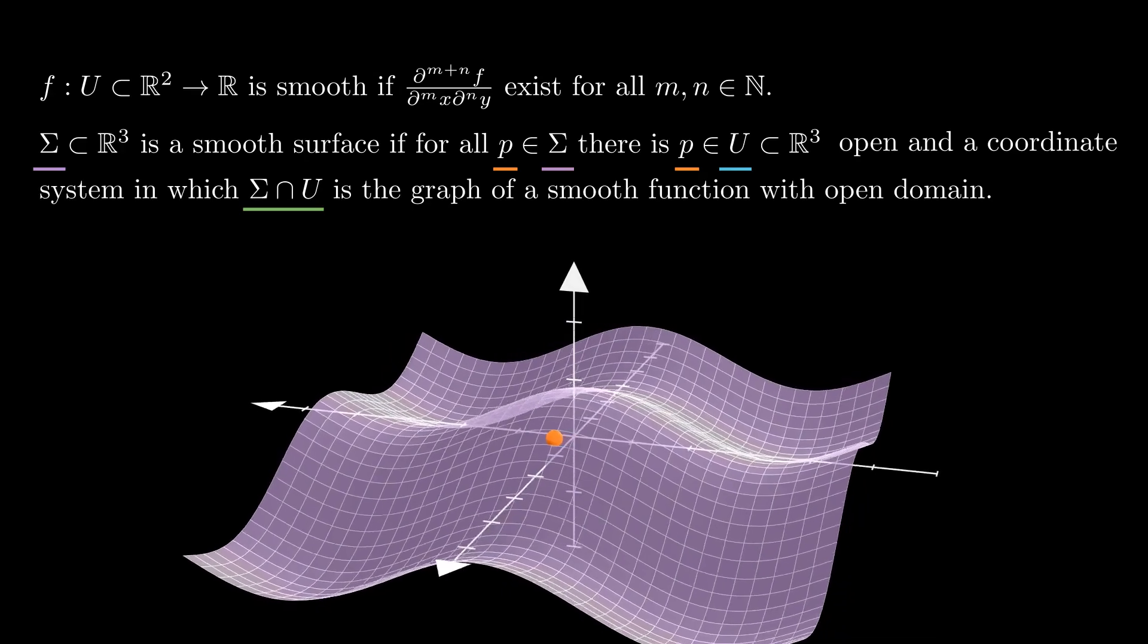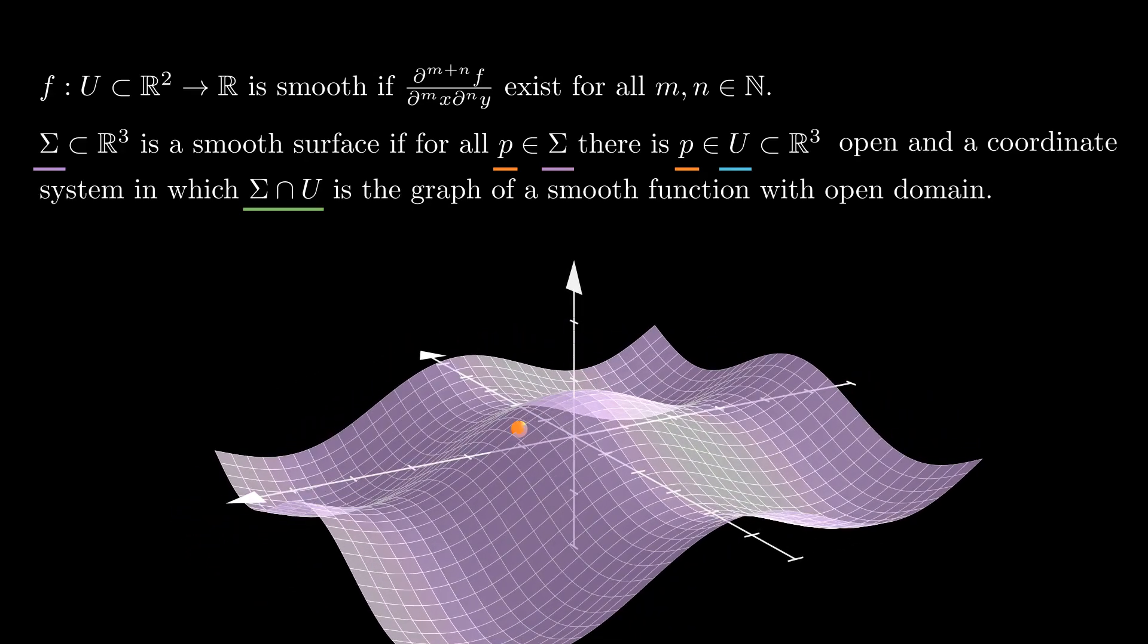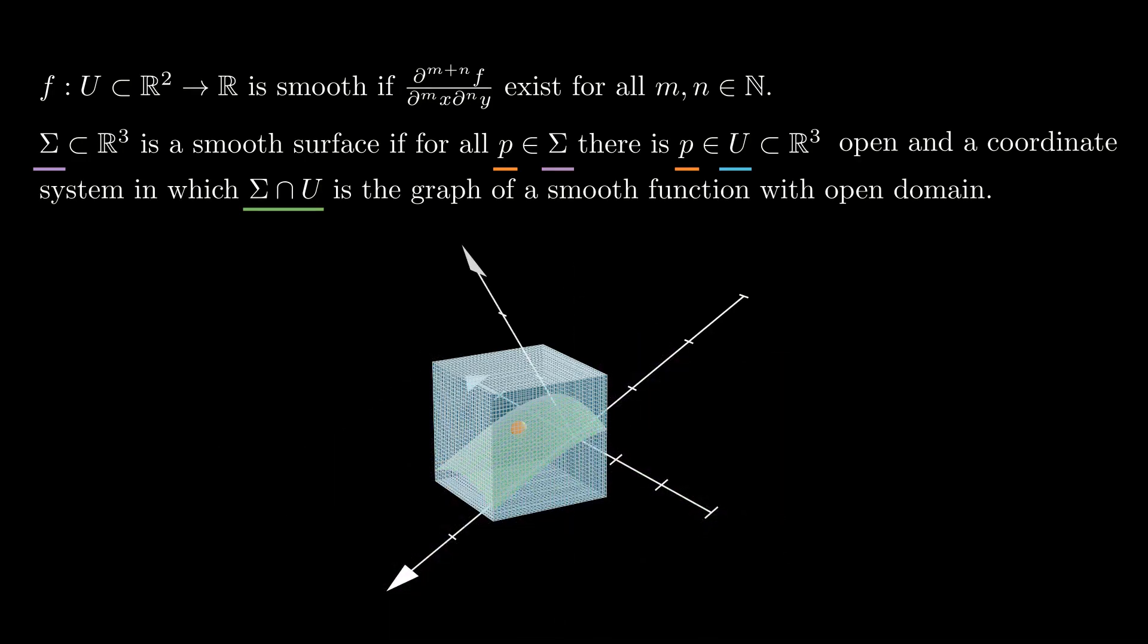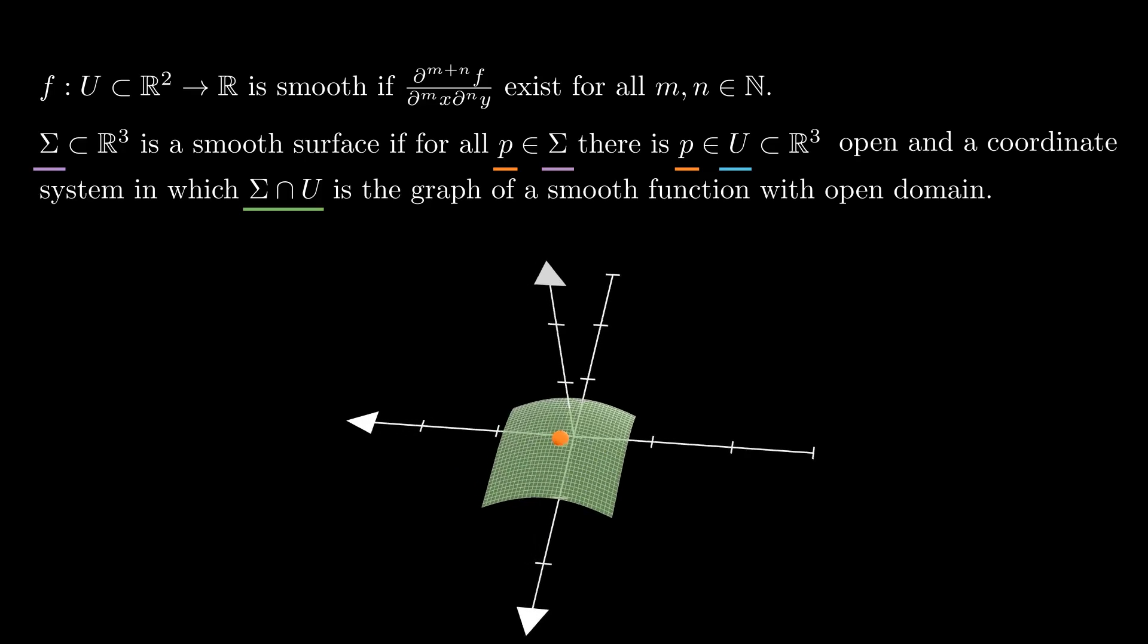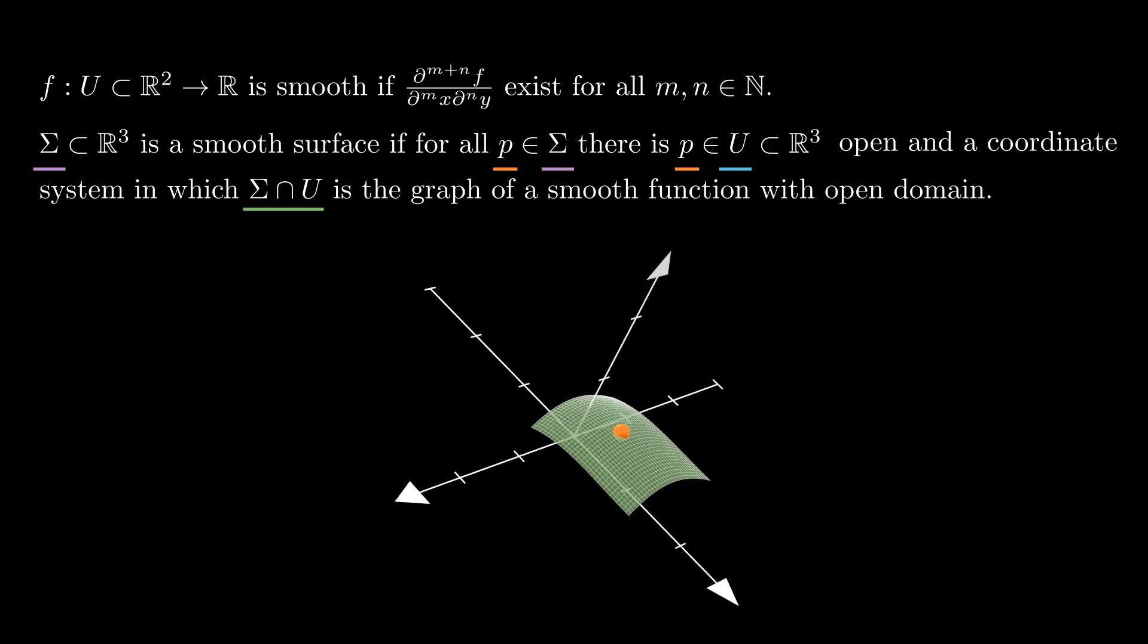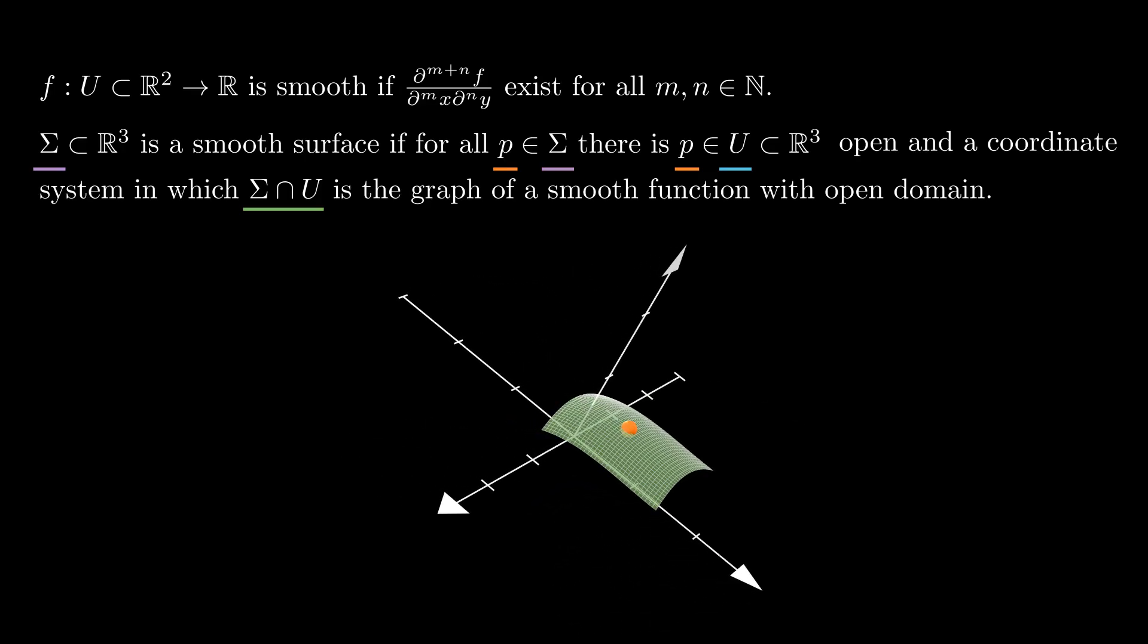for any point p in sigma, we can find an open set u containing p and a coordinate system for which the portion of sigma containing u is the graph of a smooth function with open domain with respect to this new coordinate system. Sometimes we will call smooth surfaces just surfaces.